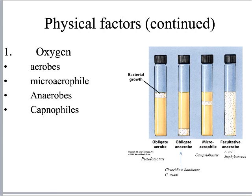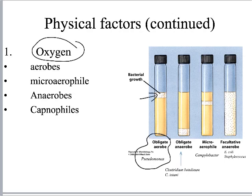Continuing with physical factors — oxygen requirements. An obligate aerobe, such as Pseudomonas, must have oxygen to survive, so it's found at the top of a culture tube. It forms a layer at the surface sometimes called a pellicle.